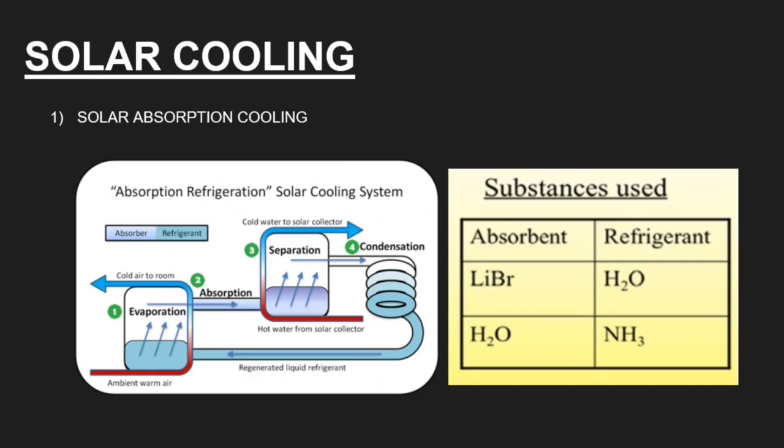There are three systems basically: number one, the warm air and cold air system of the room; second, the refrigerant system; and third, the solar heating system which helps the refrigerant to evaporate once more and get separated from the absorbent. This is the working principle of the solar absorption cooling system.